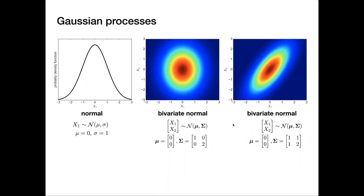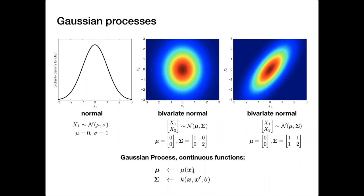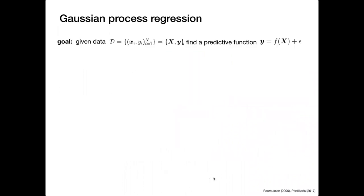The idea of a Gaussian process is to take these vectors and covariance matrices to infinite dimensions. Instead of having a vector of means, we have a function that, given some input location X, gives us the mean. And instead of a covariance matrix, we have a covariance function — a kernel function that depends on some parameters theta — that given two input locations, tells me how correlated those two variables are. The goal of regression is: given a dataset of data pairs X and Y, find a predictive function f of X that gives approximately Y plus some error.